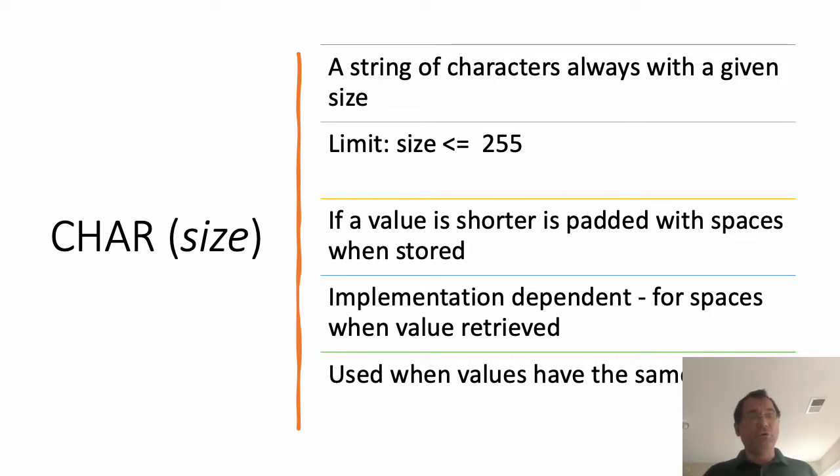The char type must have a size specified, and it will store as values a string of characters with that given size. All values must have that given size. This size can be up to 255. Usually if we have a shorter value than the size we specify, this will be padded with spaces when stored, so spaces will be added at the end and we'll still store a value with the given size.